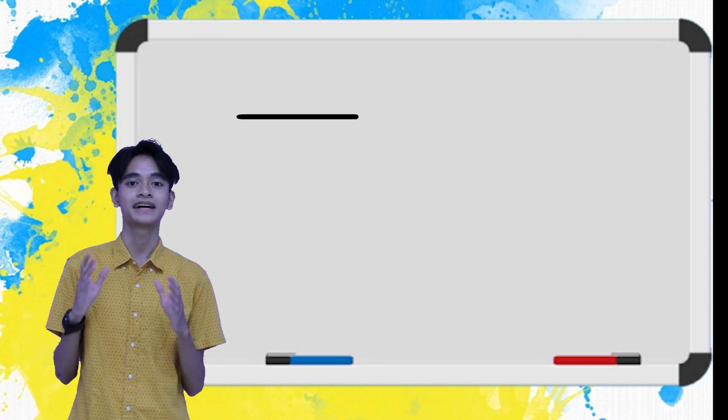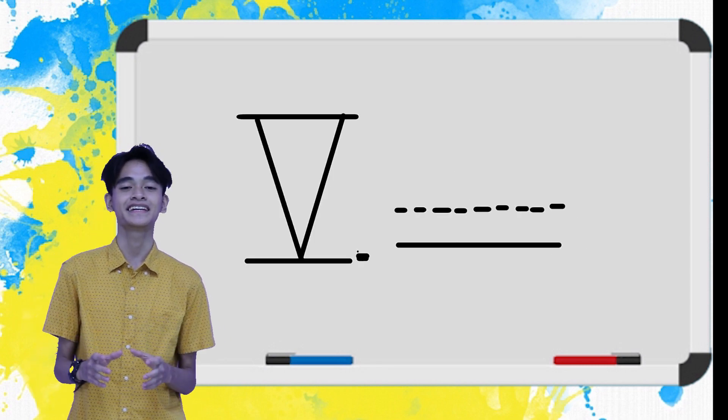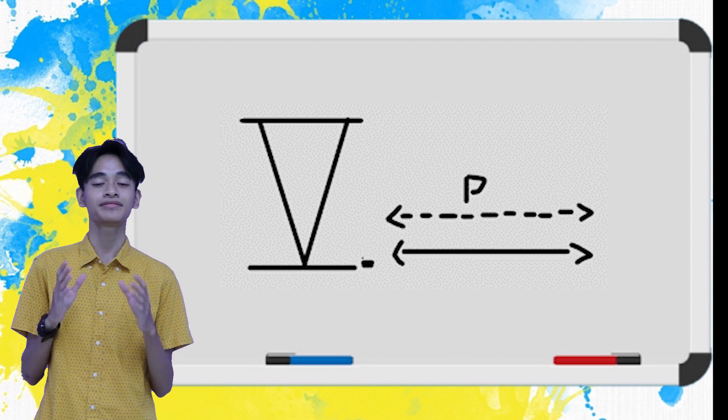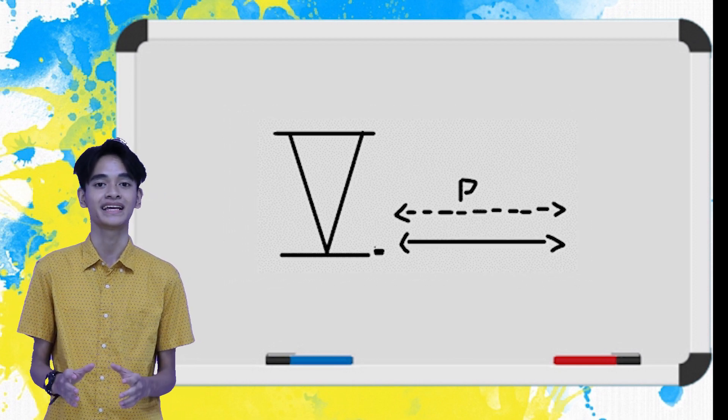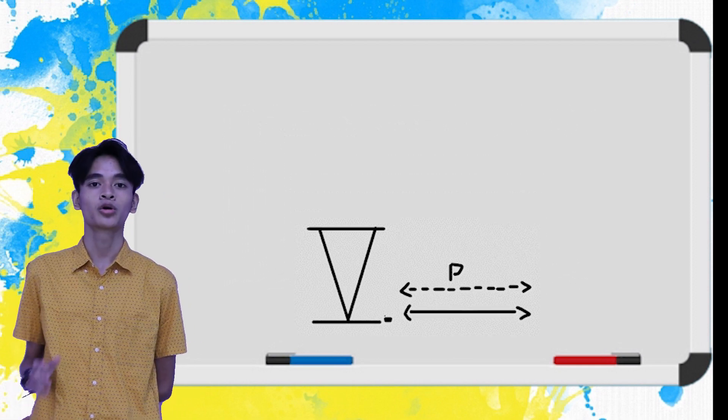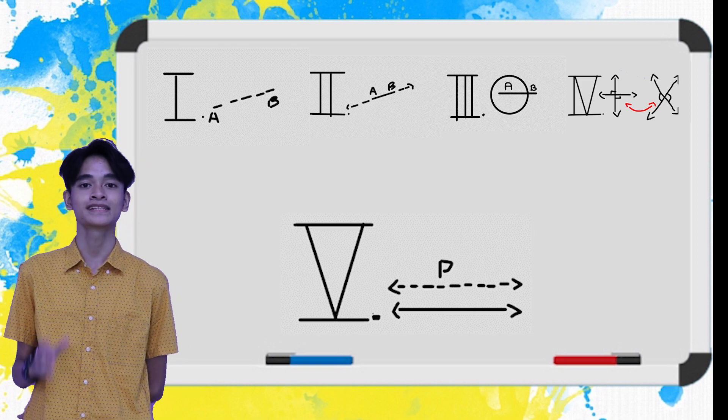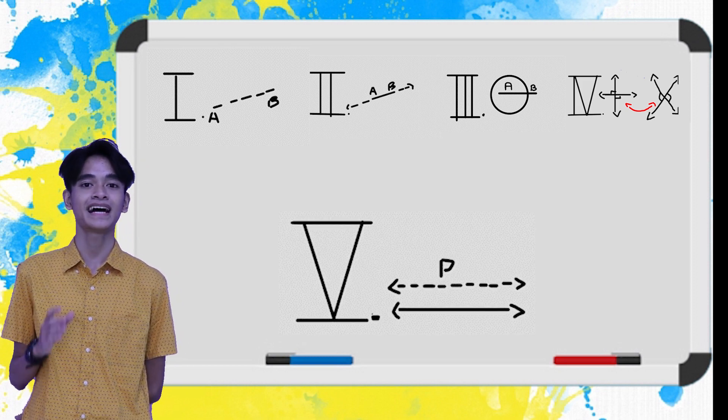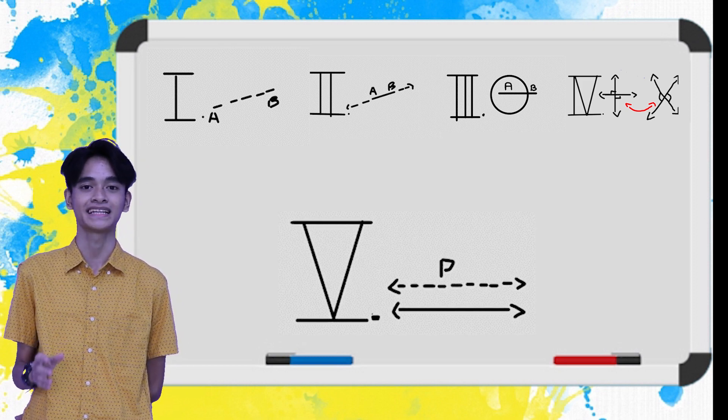Fourth is that all right angles are equal in size. And the fifth postulate is that interior angles on the same side are less than two right angles if the straight line falls between two straight lines. Moreover, if two lines are drawn constantly, they will meet on the side where the angles are less than two right angles.